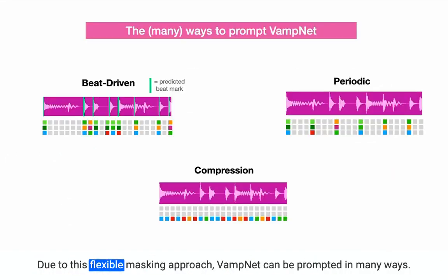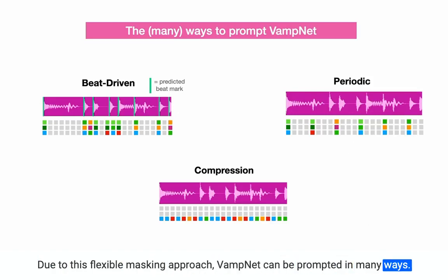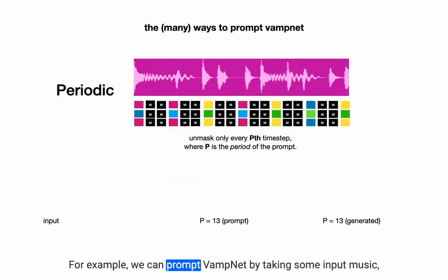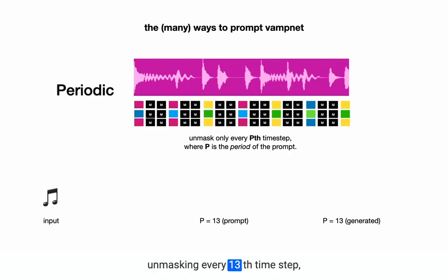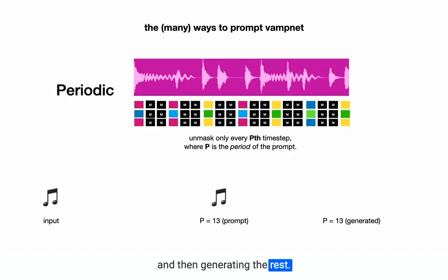Due to this flexible masking approach, VampNet can be prompted in many ways. For example, we can prompt VampNet by taking some input music, unmasking every 13th time step, and then generating the rest.